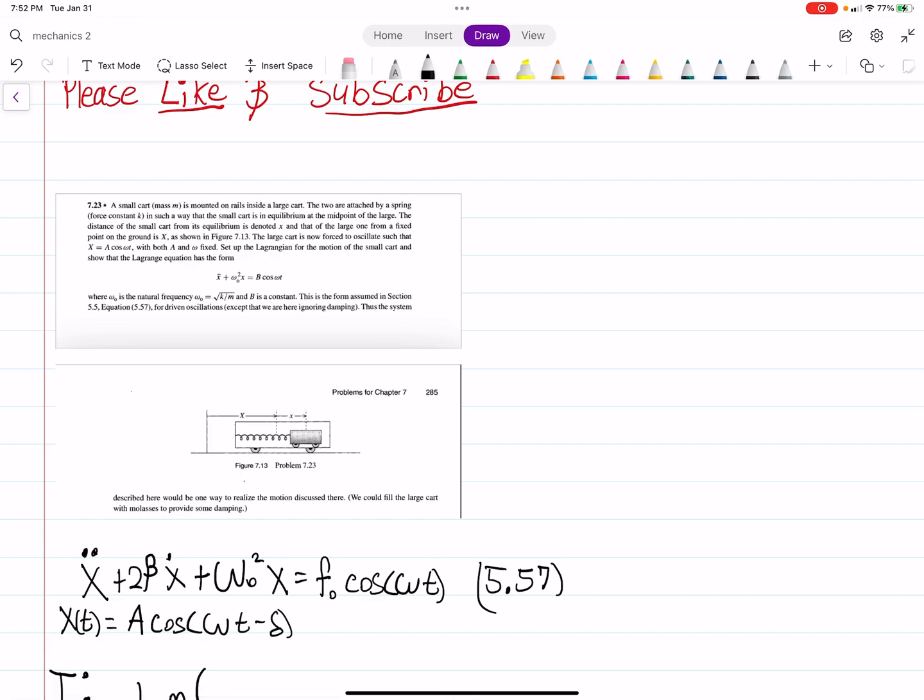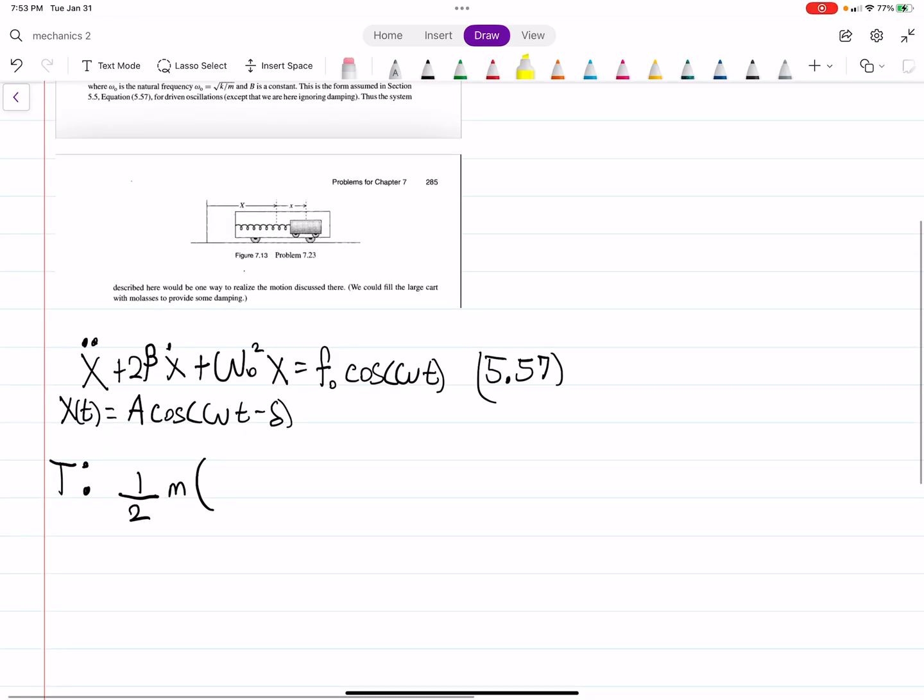So there's two carts that are moving in this case. We have the small cart of mass M that's inside the larger cart. They're connected by the spring, which will have to do with the potential energy. We'll get into that in a second. We need to find the kinetic energy for this system. In this case, we have one half times the mass, and then what is the velocity of that little cart?